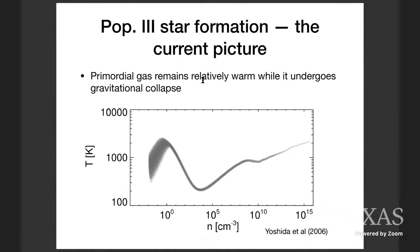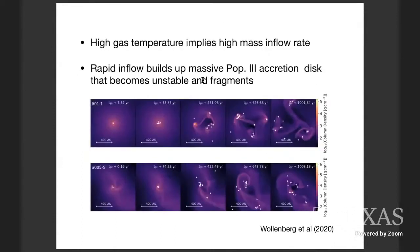We've already heard quite a lot about POP3 star formation. I just want to take a minute or two to remind everybody of what the current consensus picture is. Basically, if we have a mini halo cooled just by H2, we know that it cools and collapses, but it doesn't cool as much as we would see in a normal GMC in the nearby universe. So the temperature remains reasonably high, and this high temperature implies a high mass inflow rate. So mass flows into the center of these objects at a much higher rate than is typical in local star formation. And this rapid inflow of mass, combined with the fact that you have non-zero angular momentum, builds up a massive POP3 accretion disk that becomes unstable and fragments.